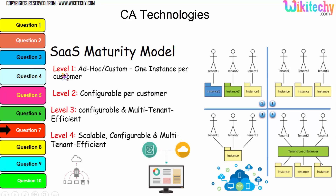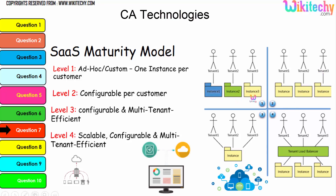Here you are able to see level one — one instance per customer — and level two, which is configurable per customer, shown in a different color with multiple instances. Level three is configurable with multi-tenant architecture, where you have a load balancer and scalable multi-tenant efficiency. This is your cloud computing network environment.